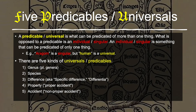What's opposed to a predicable or universal is an individual or a singular—the words individual and singular will be treated interchangeably. An individual or singular is something that can be predicated of only one thing. For example, Aragorn is a singular because it can only be predicated of that one individual. In contrast, human is a universal because it can be predicated of multiple individuals: Aragorn, Plato, and Socrates. All of these individuals fall under the concept signified by human, but only one individual falls under the concept signified by Aragorn—so Aragorn is a singular, but human is a universal.